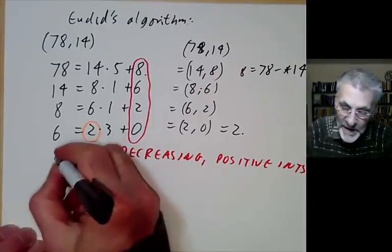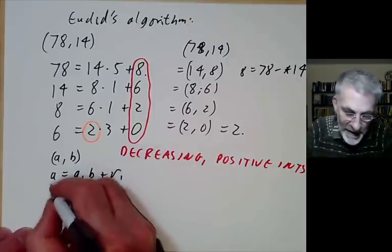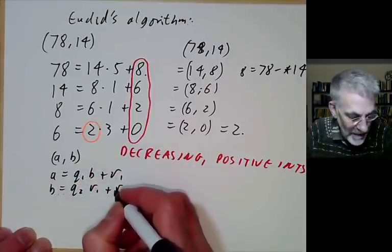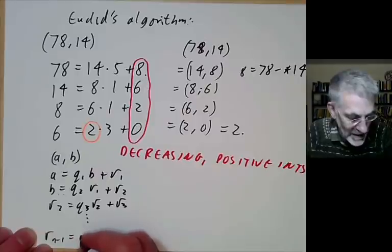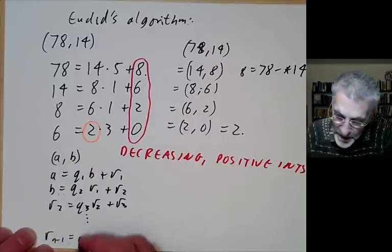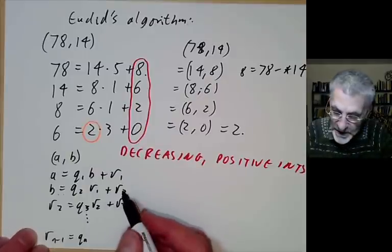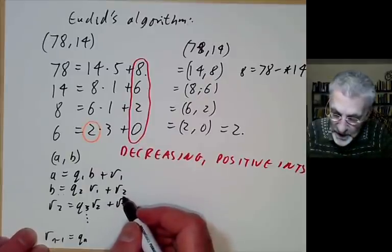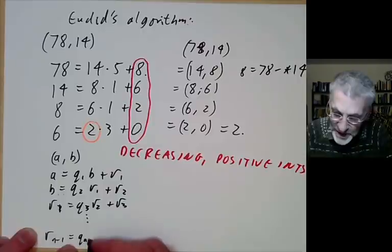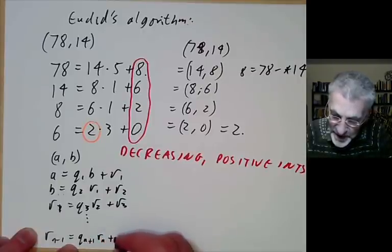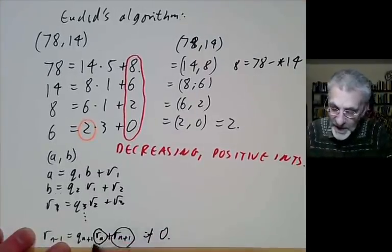For the general algorithm finding gcd(A,B), write: A = Q₁·B + R₁, B = Q₂·R₁ + R₂, R₁ = Q₃·R₂ + R₃, and continue until some Rₙ₊₁ = 0, at which point the greatest common divisor is Rₙ.